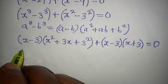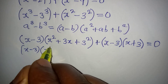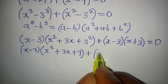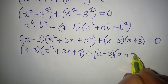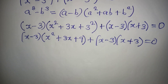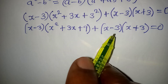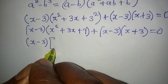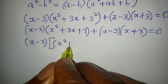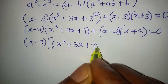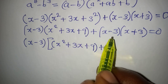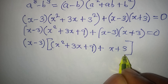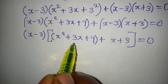Let's check: we have (x − 3)(x² + 3x + 9), since 3² = 9, plus (x − 3)(x + 3), all equal to zero. We can pick out (x − 3) as a common factor, giving (x − 3) times [(x² + 3x + 9) + (x + 3)] equals zero.